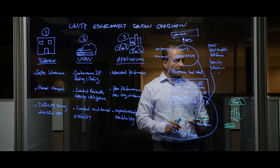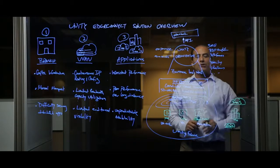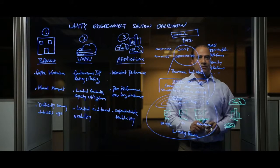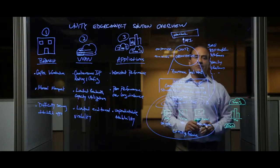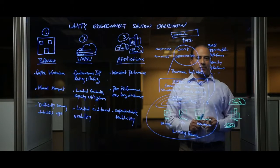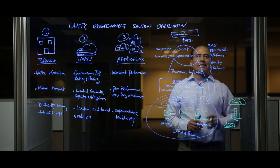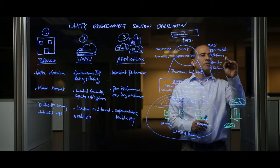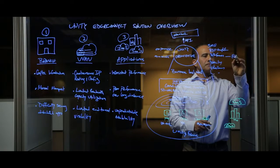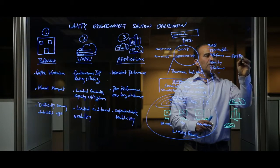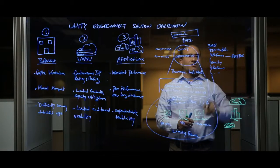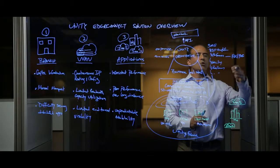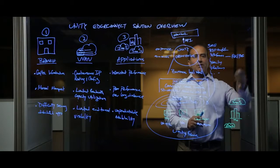The other two aspects about the solution is predictable performance over any transport and simplified security no matter where the application resides. So let's take a look first at the performance. There are four components that we provide that's built into the Edge Connect, providing that predictability. So on the performance side, these components are the forward error correction and the packet order correction. So if there's any lost packets or packets received out of order, we correct for that automatically.